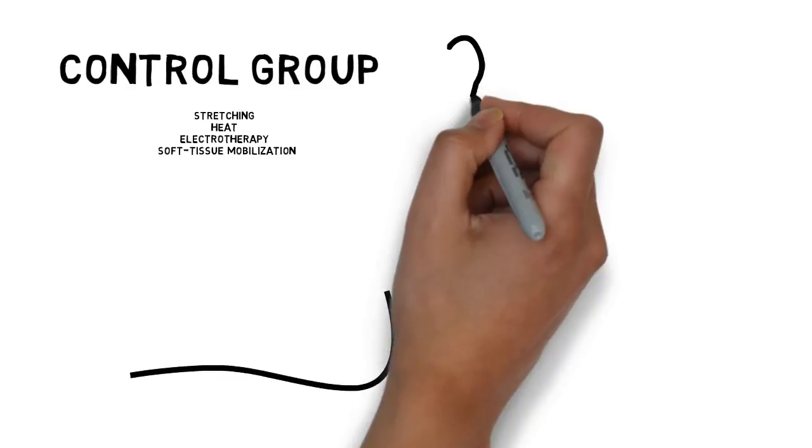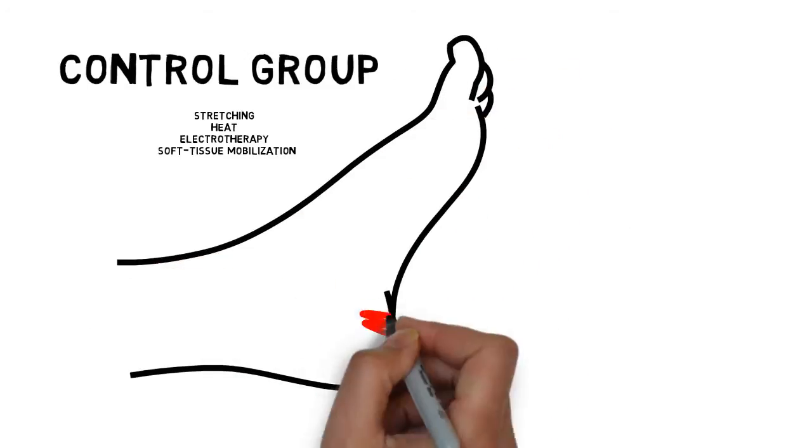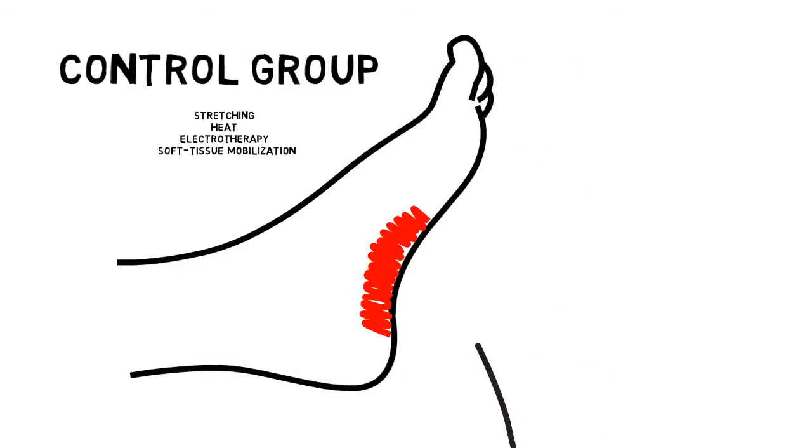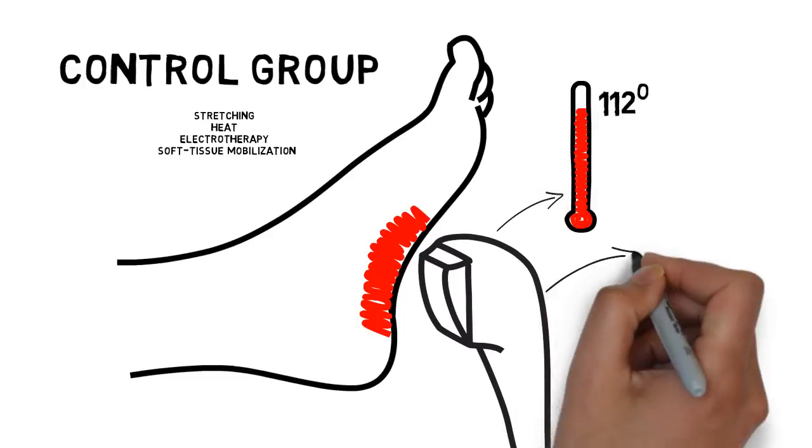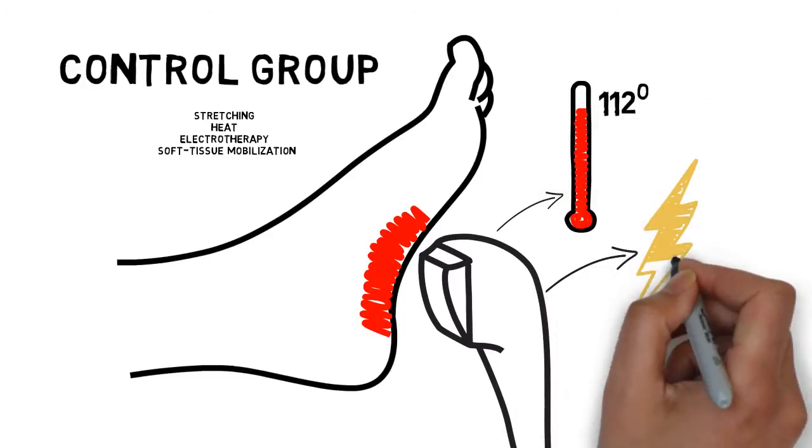Heat, electrotherapy, and soft tissue mobilization were administered simultaneously with Dynatronic's Thermostem Probe, significantly reducing the time typically required to administer these three separate treatments individually.